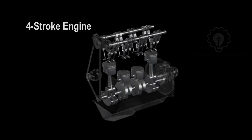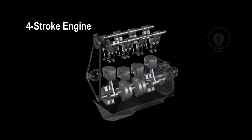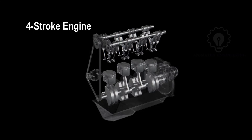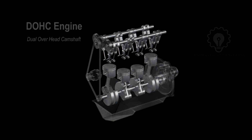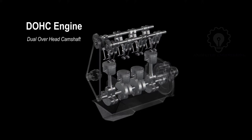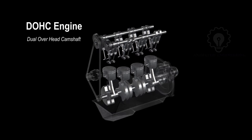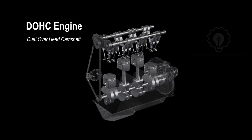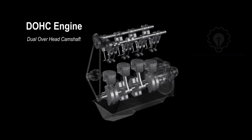Let's look at the internal structure of a four-stroke, inline four-cylinder engine. Here is a dual overhead camshaft engine, which is commonly seen in most sedan and hatchback cars.